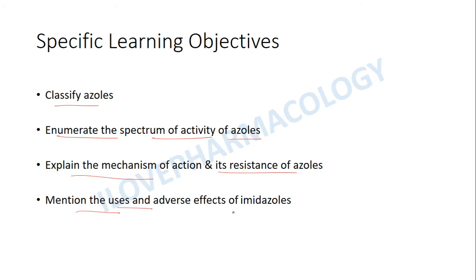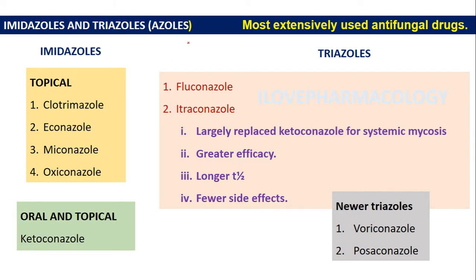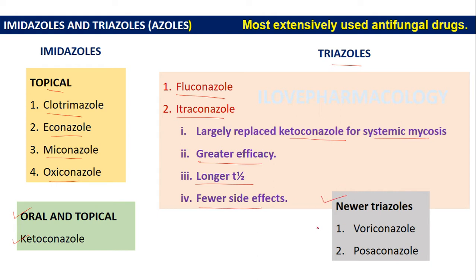You should be able to mention the uses and adverse effects of imidazoles. Azoles can be classified into imidazoles and triazoles, which are the most extensively used antifungal drugs. Under imidazoles, topical examples include clotrimazole, econazole, and oxyconazole; ketoconazole can be used both orally and topically. Under triazoles, fluconazole and itraconazole have largely replaced ketoconazole for systemic mycosis due to greater efficacy, longer action, and fewer side effects. Newer triazoles include voriconazole and posaconazole, used in difficult fungal infections.